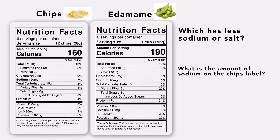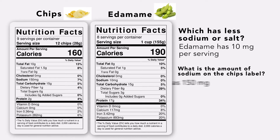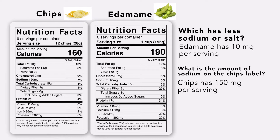Edamame has 10 milligrams of sodium per serving while the chips have 150 milligrams of sodium. The edamame label shows it has less sodium and more nutrients than the chips, so it is a healthier snack option. Go ahead and pause this video so you can write down your answers, including the percentage of sodium.